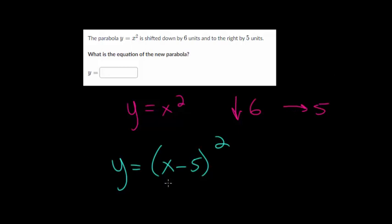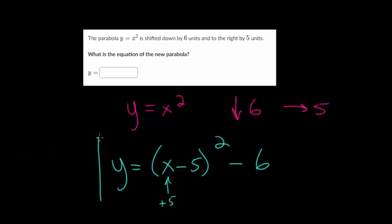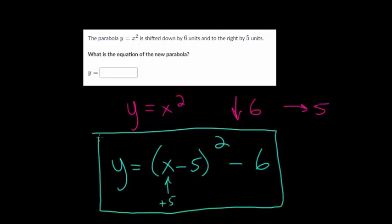Make sense of this by thinking about which x value makes the expression zero — that would be positive five, which is why we're shifting five in the positive direction. The down six means we subtract six on the outside. Graph this to check your work, but the answer is y equals x minus five, squared, minus six.